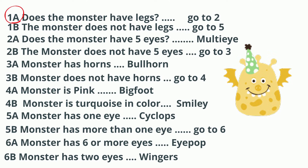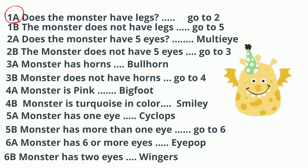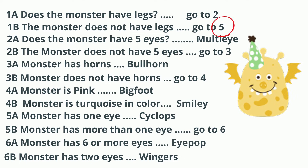We're going to start with this guy — he looks like he's been at a birthday party and he has some wings. 1a says 'monster has legs' — no. Then 1b: 'monster does not have legs' — yes, so it says to go to 5.